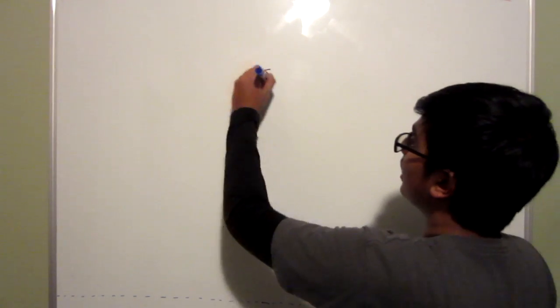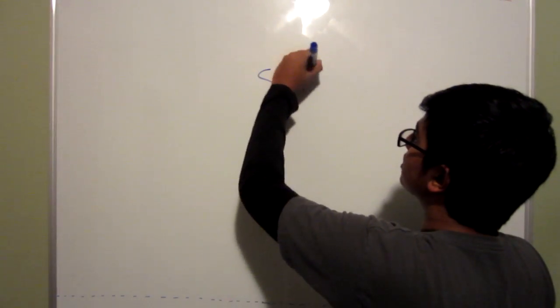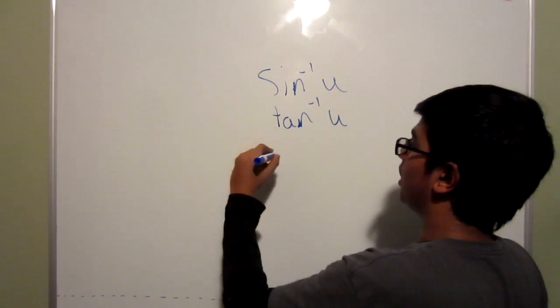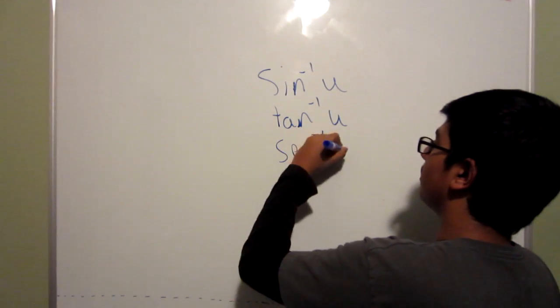The order is the sine inverse of u, tangent inverse of u, and the secant inverse of u.